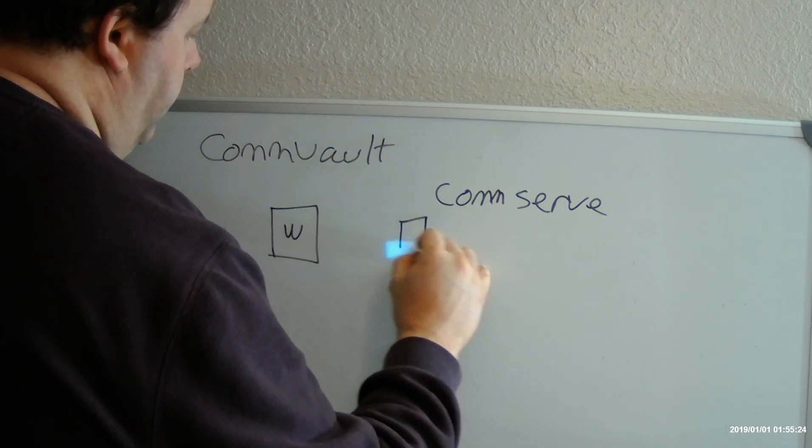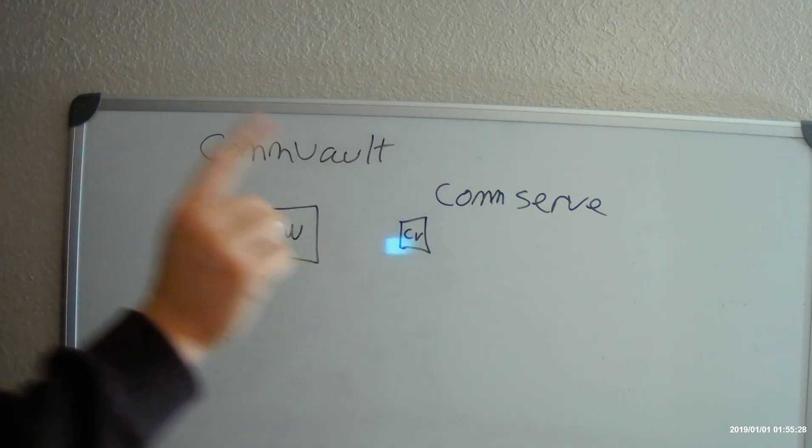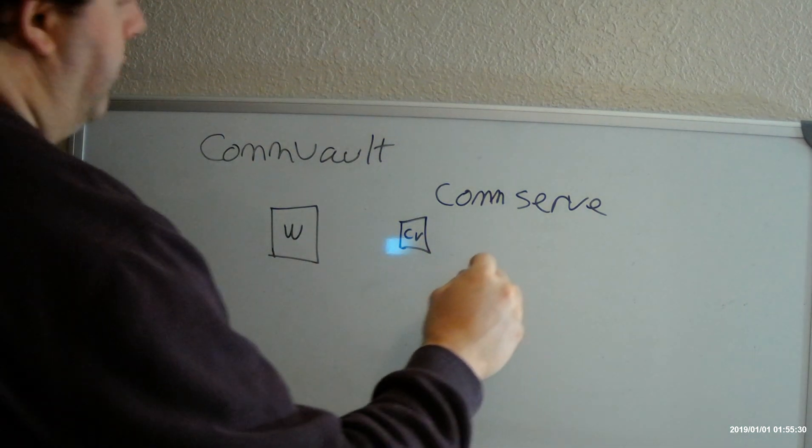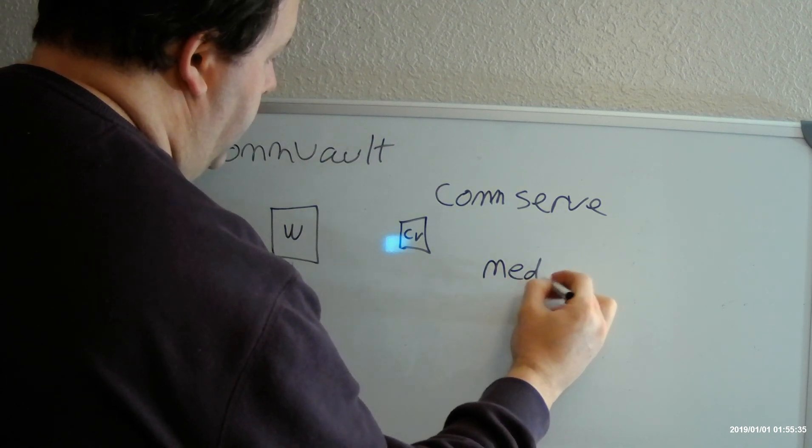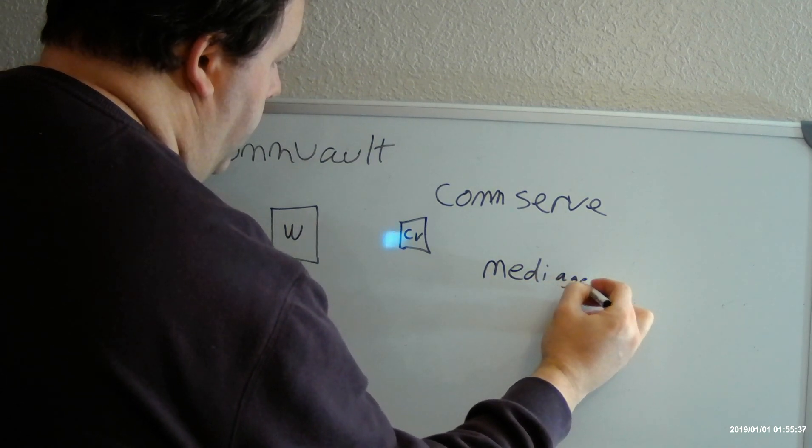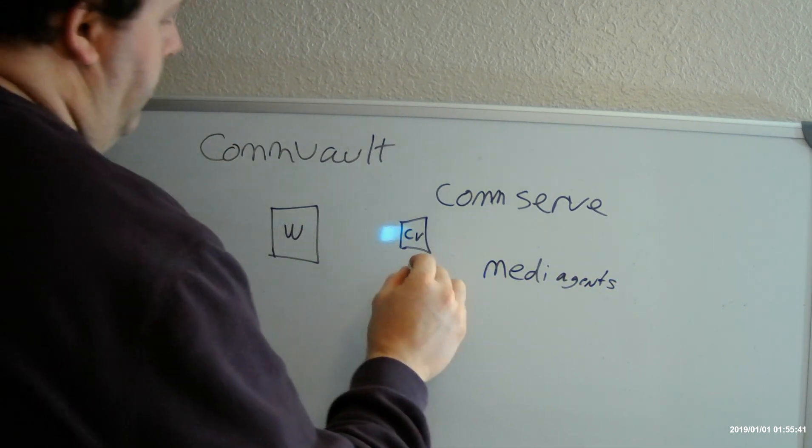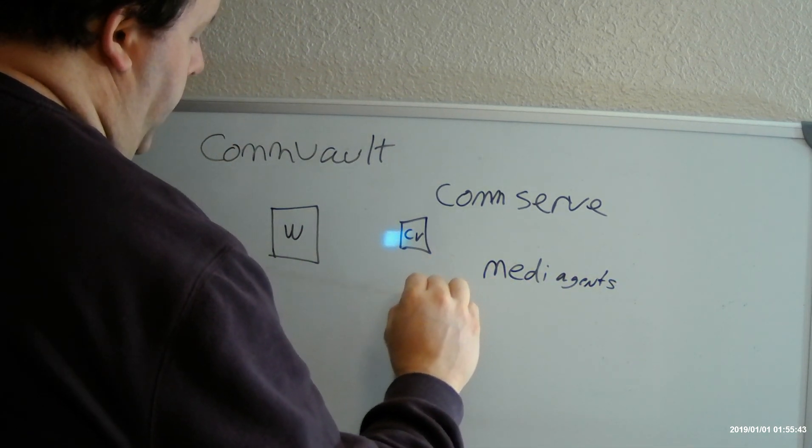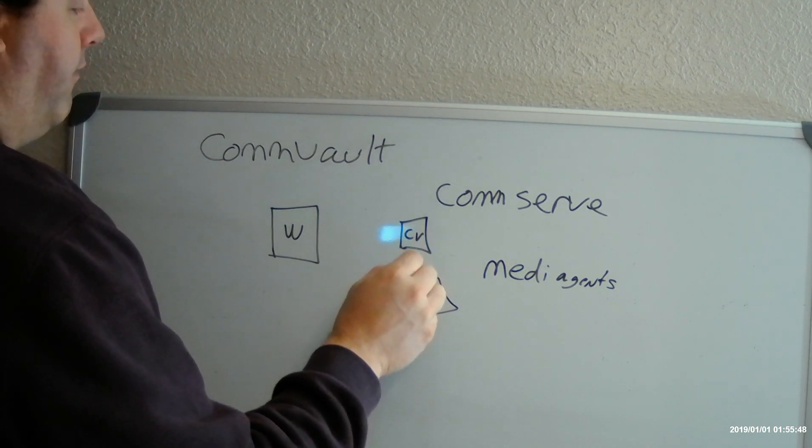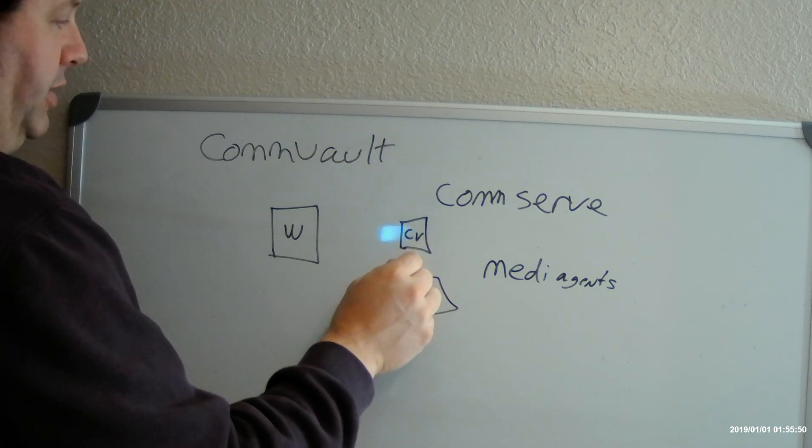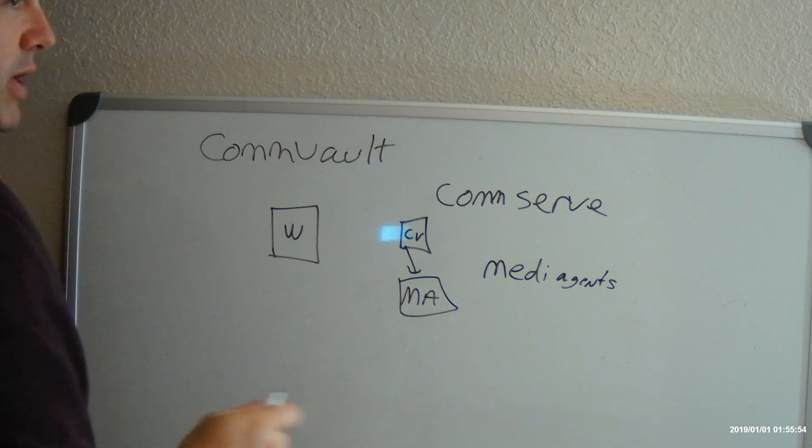We're going to call commserve CV. Now the other aspect of Commvault, they call them media agents. So a media agent is the worker bee, we'll call it MA. So Commvault, the commserve says hey media agent, do this task, back up this client for instance.